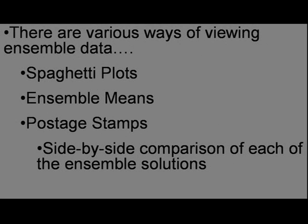Now there are various ways of viewing ensemble data. There's the spaghetti chart, where you take a key line on the 500 millibar chart — say a key height line — plot all the different variations together, and see how much spread there is between those lines. There's the ensemble mean, which is kind of the average of all of them. And then there's what we call the postage stamp — a side-by-side comparison of each ensemble solution. One of the best places to view these charts that I've found is the PSU e-weather wall.